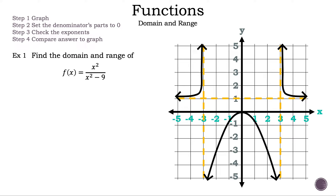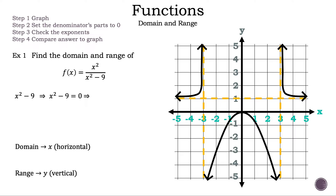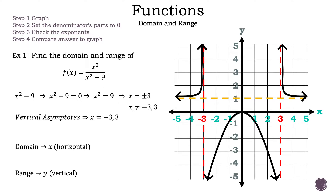Let's put up the graph to help us visually, and put what we want to find — the domain and the range. First, let's find the domain. We bring down x squared minus nine and set that equal to zero. So we have x squared minus nine equals zero. Let's add nine to both sides, then take the square root of both sides. So x equals plus or minus three. We cannot use these numbers because the denominator would be zero. So we have vertical asymptotes at x equals negative three and x equals three.